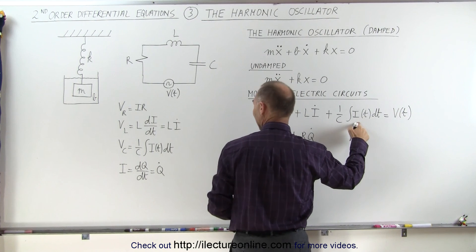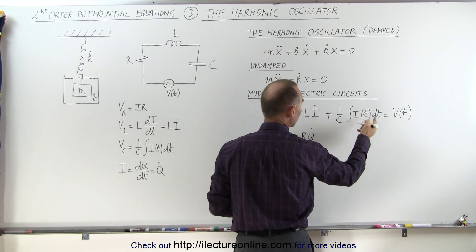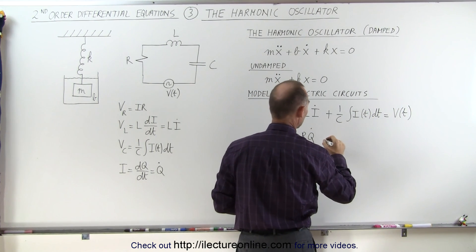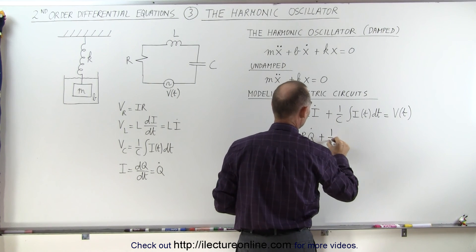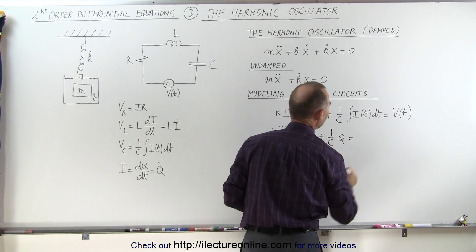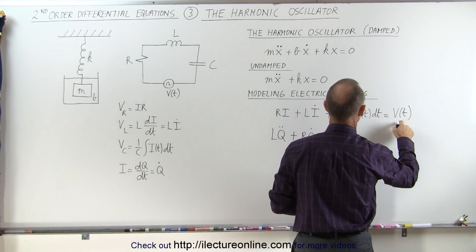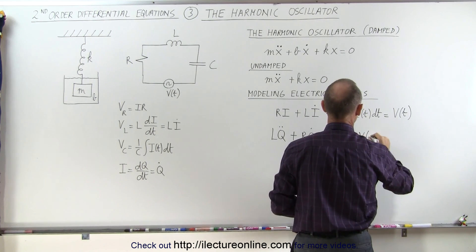And then the integral of i, we take the derivative of that, we get i, that would simply be q. So the integral of q dot is q, so we get plus 1 over c times q is equal to, we have to write, well, we can write velocity of time.